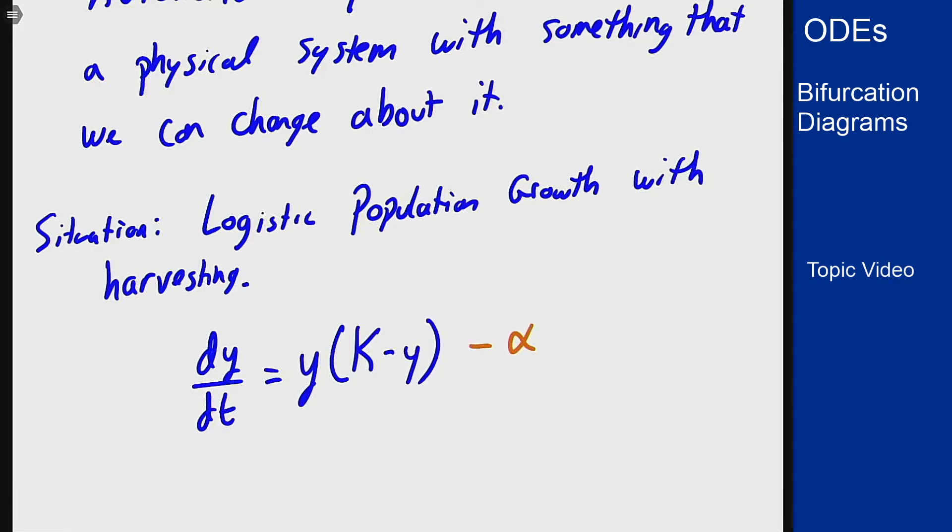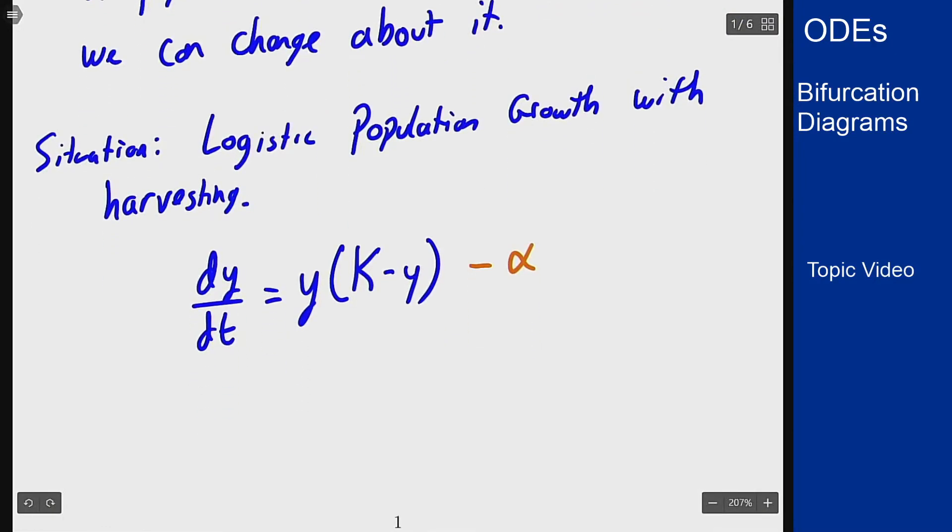The idea is that the population grows according to the normal logistic model, but we're also removing units from the population at a rate of alpha. This alpha is the parameter we can adjust, referred to as the variable harvesting rate.